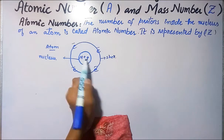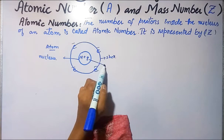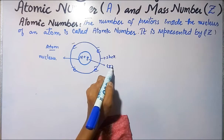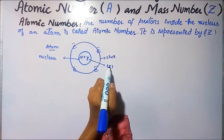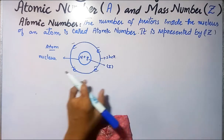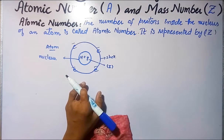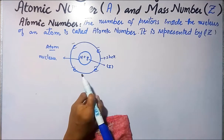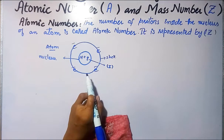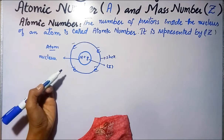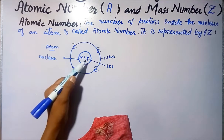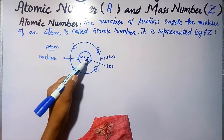The number of protons is represented by Z. Atomic number is also called the number of protons, represented by Z. Elements are identified by their atomic numbers, and each element has a different atomic number because the number of protons is different for each element.